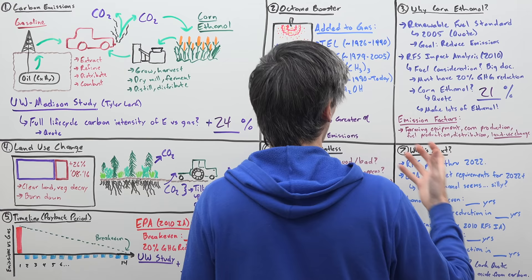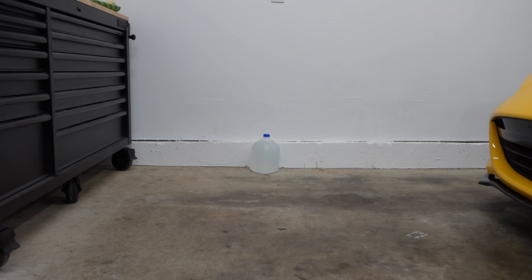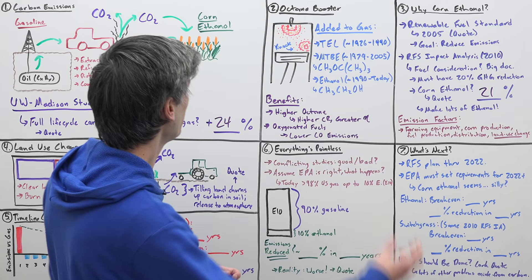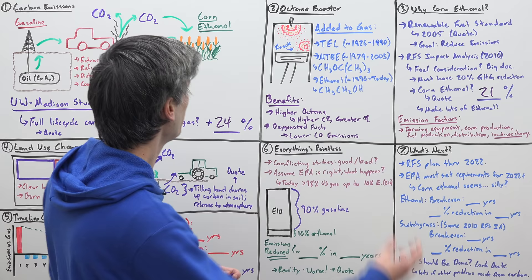So even the EPA study that looked into this found, hey, it's actually only 21% better than gasoline. This study out of the University of Madison saying it's 24% worse. But keep that in mind, right? Because of that 21% better, we decided, hey, let's make tons of corn-based ethanol and put it in our fuel. Now, where do the emissions come from if this is just a constant cycle, right?